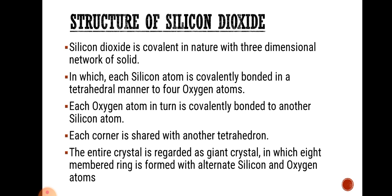Next we will look at the structure of silicon dioxide. Silicon dioxide is covalent in nature, that is, they share electrons to form bonds, which makes a three-dimensional structure in which each silicon atom is covalently bonded with four oxygen atoms, and in turn each oxygen atom is covalently bonded to another silicon atom, which makes a tetrahedral structure. This entire crystal makes a giant crystal in which an eight-membered ring is formed with alternate silicon and oxygen atoms. This is a picture of the structure of silicon dioxide.